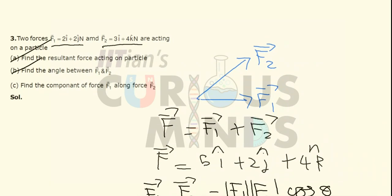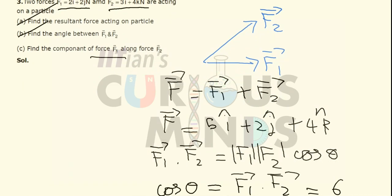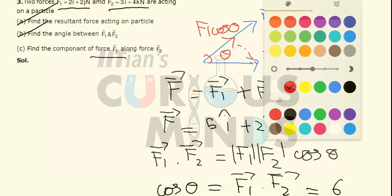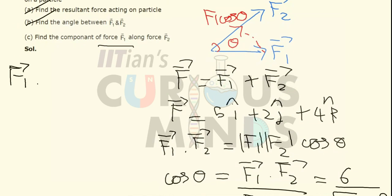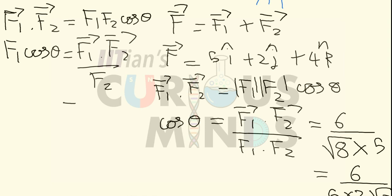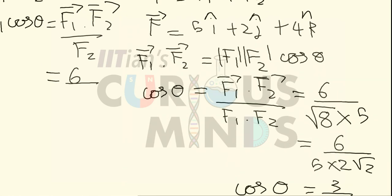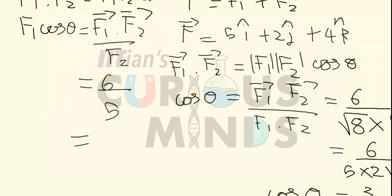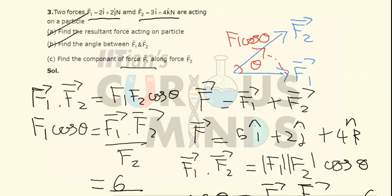For the third part, we need the component of F1 along F2. The component of F1 along F2 is F1·cosθ. Using the dot product formula, F1·F2 = |F1||F2|cosθ, so |F1|cosθ = (F1·F2) / |F2| = 6 / 5 = 1.2 newton. That completes all three parts.